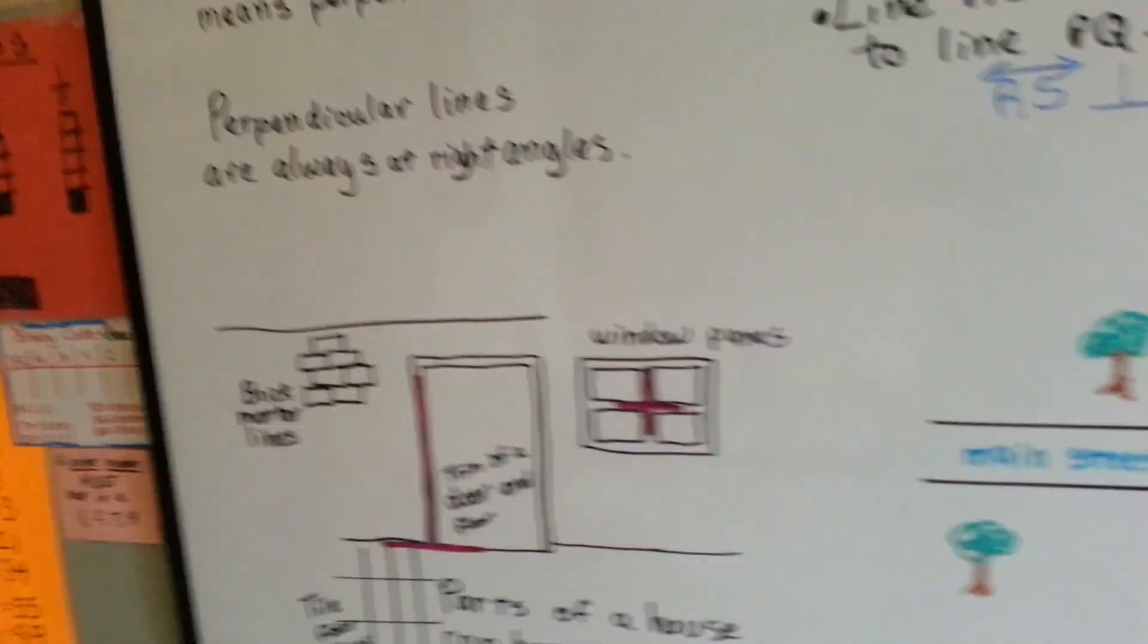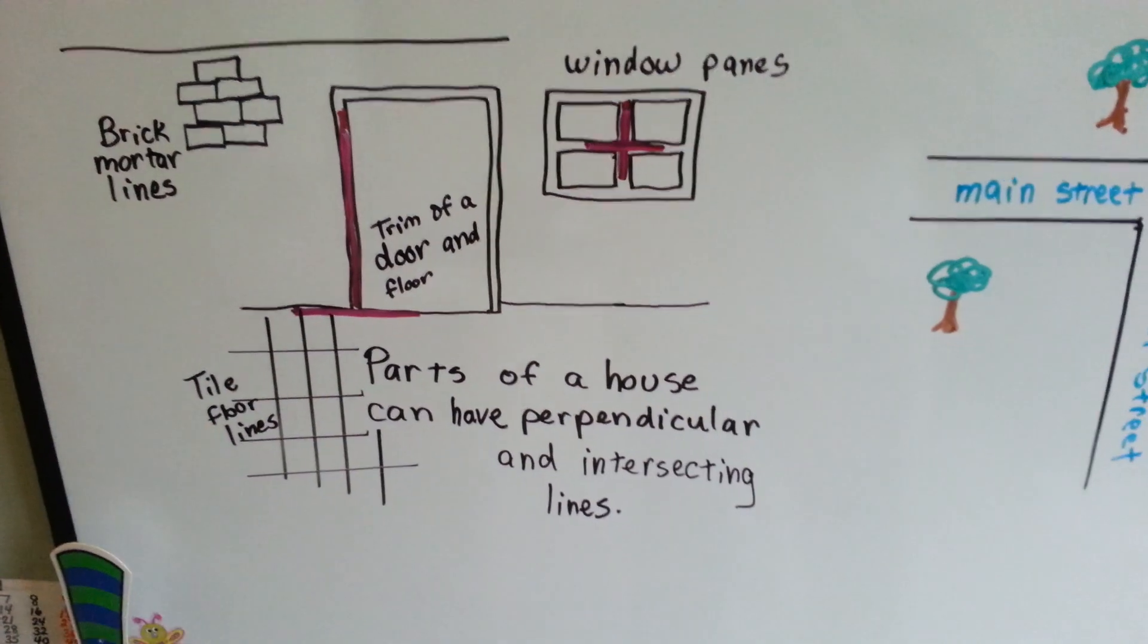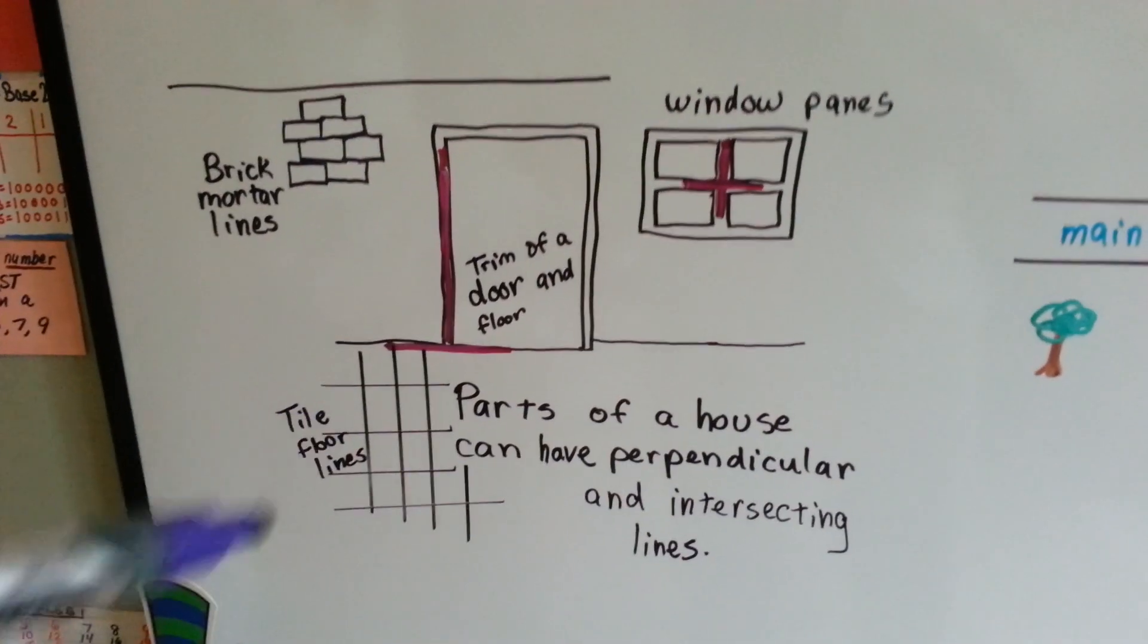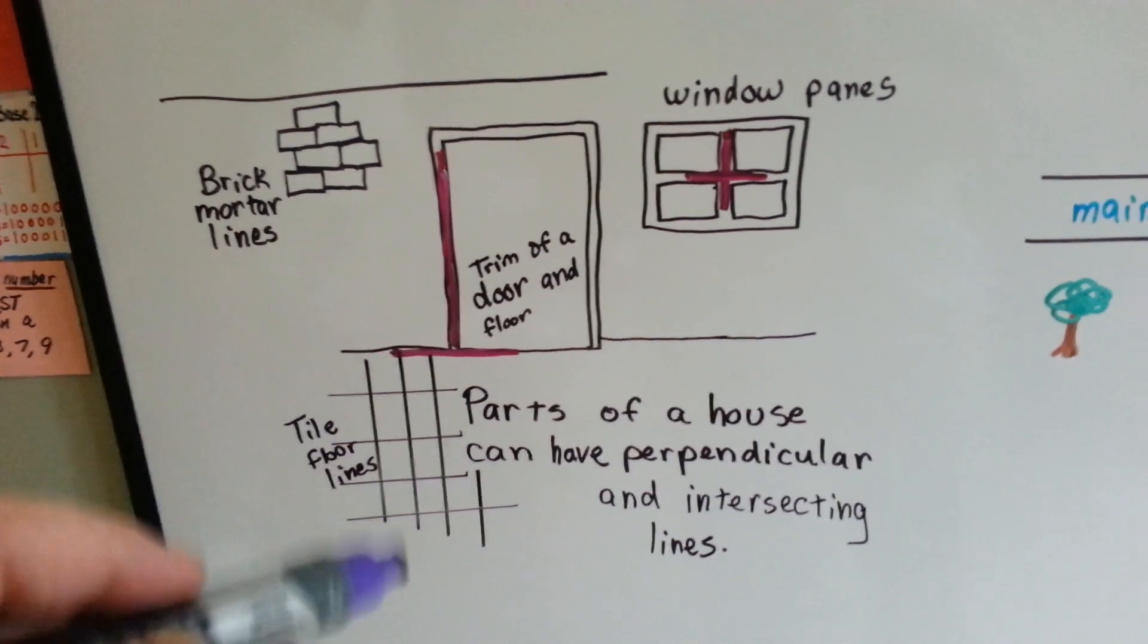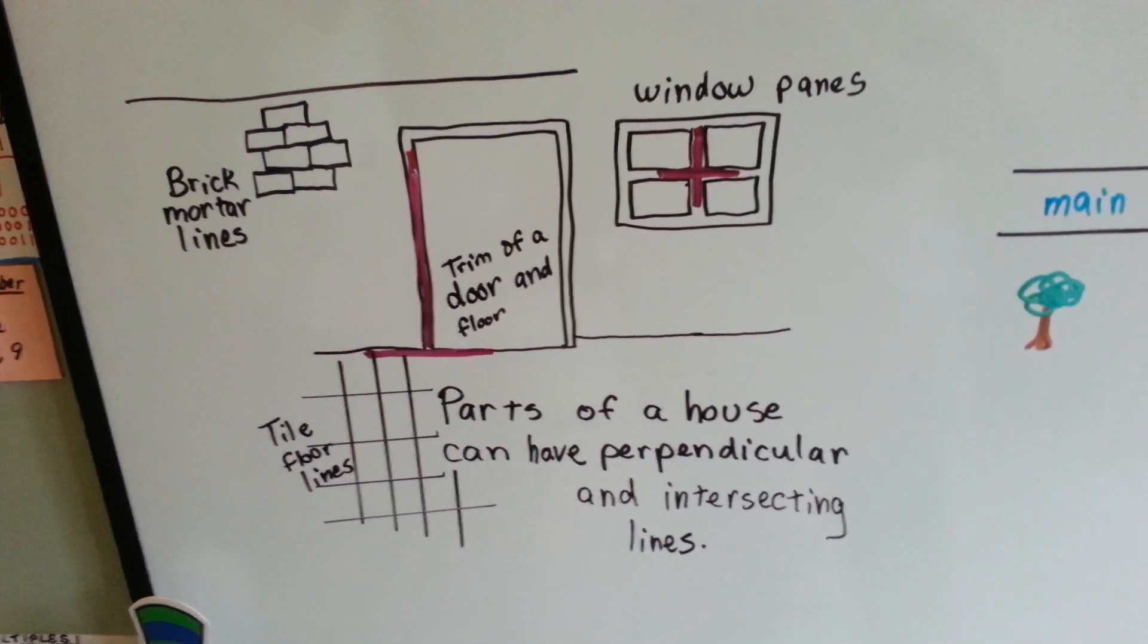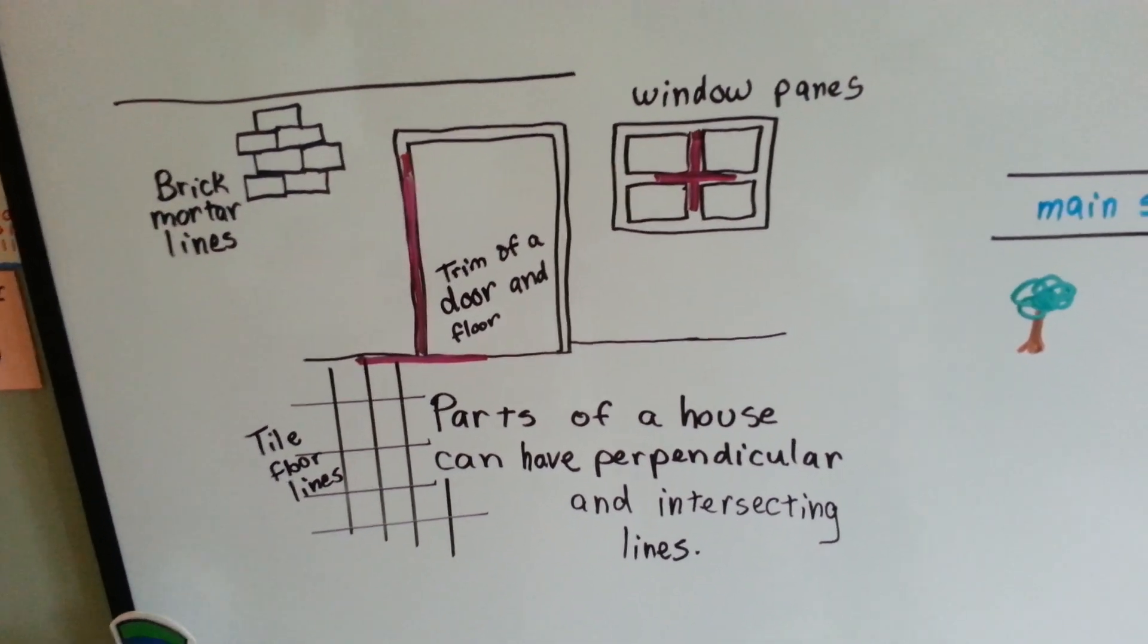There are perpendicular and intersecting lines everywhere around us. They're in the window panes of our windows, where the door trim meets the floor, in brick mortar lines, in tile floor lines. They're everywhere. Maybe even ceiling tiles. They're everywhere, aren't they?